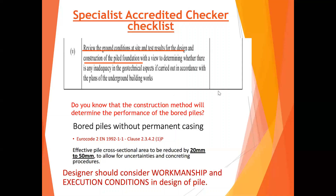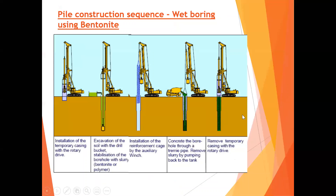It is not simply that dry has one parameter and wet has another parameter. For students who have never seen a bored piling machine: a simplified overview is that they install a casing, drill through using bentonite to stabilize the hole, cast concrete, place the rebar, and then withdraw the casing. That is the basic bored piling process.